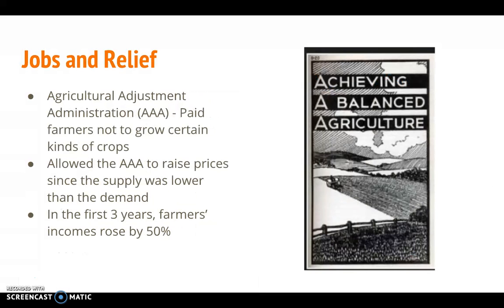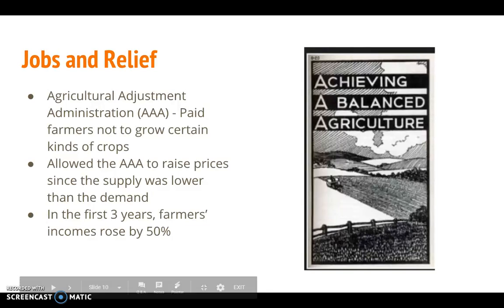On May 12th, Congress passed the Agricultural Adjustment Act (AAA). The act had two goals: to raise farm prices quickly and to control production so that prices would stay up long-term. In the first year, the supply of food far exceeded demand, so the AAA raised prices by paying farmers to destroy crops, milk, and livestock. Though shocking to many when millions went hungry, the New Dealers claimed it was necessary. In the first three years of the New Deal, farmers' incomes rose by about 50%.